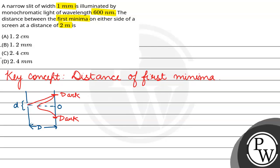Our formula is y equals lambda D by small d. This is lambda, our wavelength. But we have the distance between the first minima on either side. This means that this is y and this is also y here.